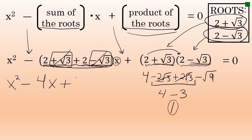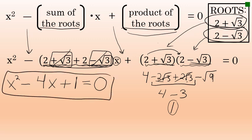That 1 is added at the end of the quadratic equation, and we have now written our answer: x squared minus 4x plus 1 equals 0. This is the only quadratic equation that has the two roots 2 plus the square root of 3 and 2 minus the square root of 3.